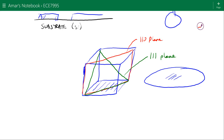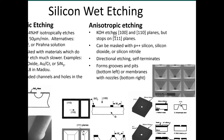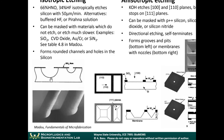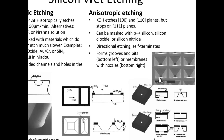The etchant KOH etches at different rates in the (1,0,0) and (1,1,0) planes at the same rate, but it does not etch the (1,1,1) plane. So instead of forming nice rounded structures where the etchant etches uniformly in every direction, you get these anisotropic, very well-defined patterns — because when the etchant reaches a (1,1,1) plane, it stops etching at that point.